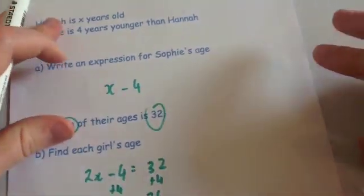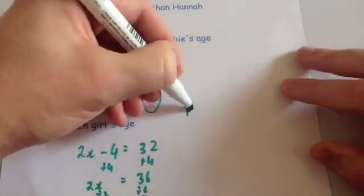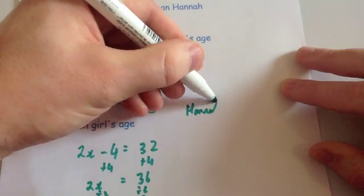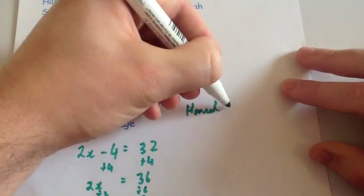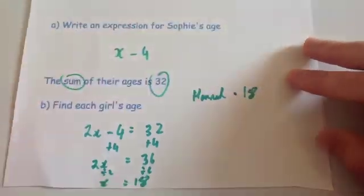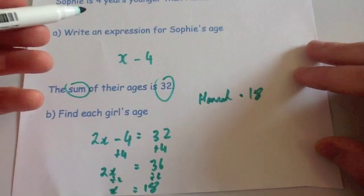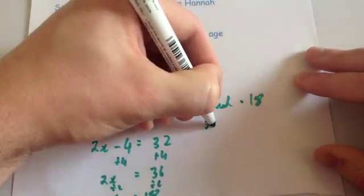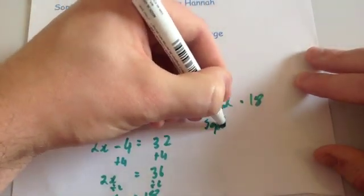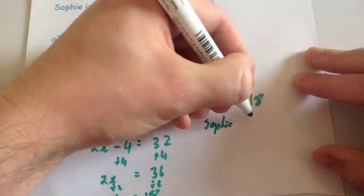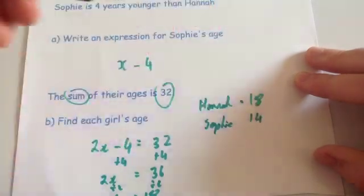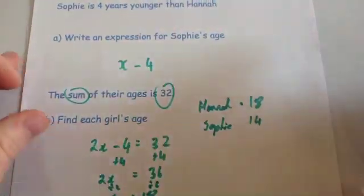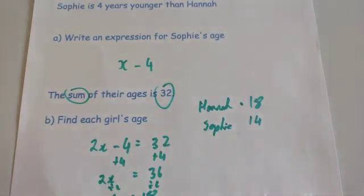So Hannah is 18 years old. Sophie was 4 years younger, so Sophie is 14. If you check, 18 and 14 add together to give 32, so that's obviously correct.